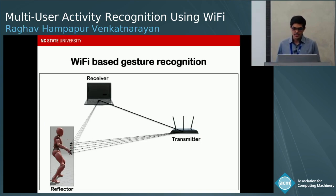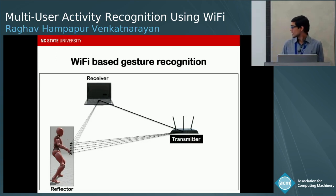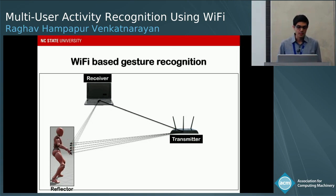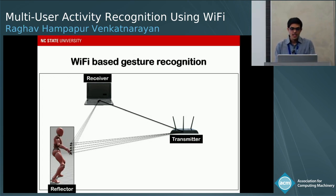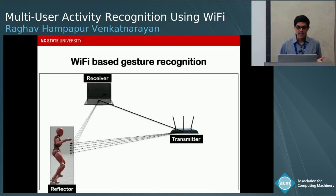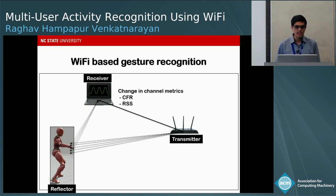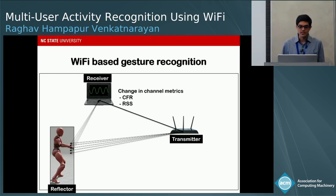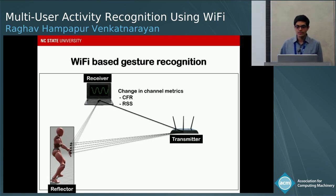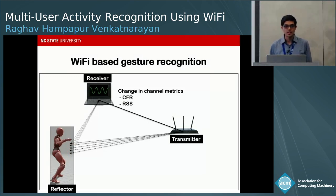Recently there has been a new class of gesture recognition systems that leverage Wi-Fi signals. Suppose you have a Wi-Fi signal transmitted from a transmitter to a receiver, and a moving human acts as a wireless reflector. Whenever the human creates a certain motion, the set of reflected paths changes, resulting in changes to channel metrics such as the channel frequency response and received signal strength. A certain pattern of change emerges for each gesture.